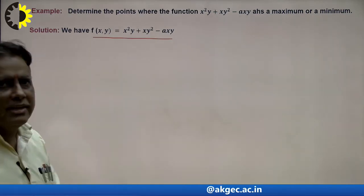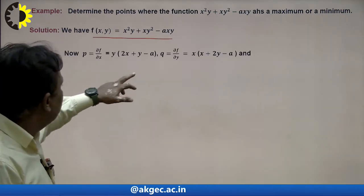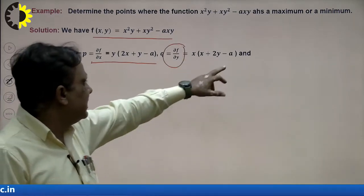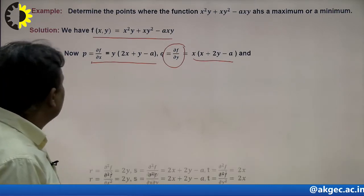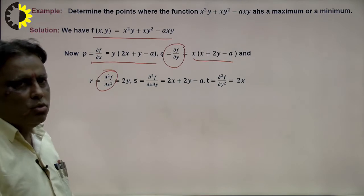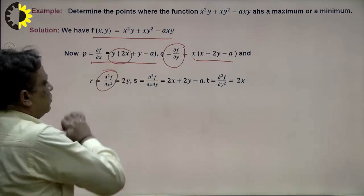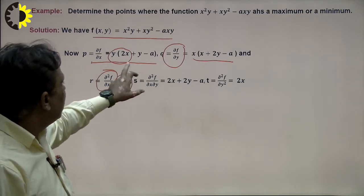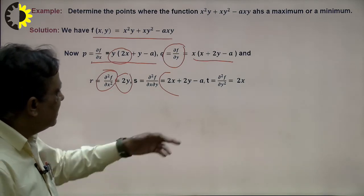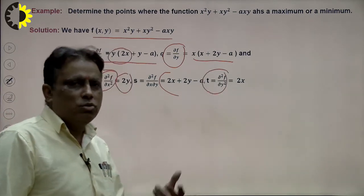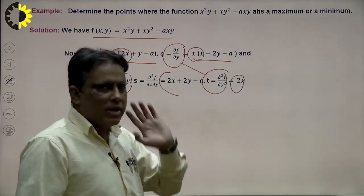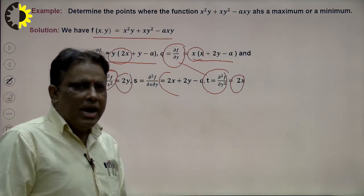For another function, we calculate ∂f/∂x (first derivative with respect to x) and ∂f/∂y (partial derivative with respect to y). For maxima and minima, we put ∂f/∂x = 0 and ∂f/∂y = 0. We then calculate the second derivative to get r. The result: differentiating 2yx with respect to x gives 2y for r. s = ∂²f/∂x∂y gives 2x + 2y. t means differentiating twice with respect to y: differentiation of x² gives 2x, leading to t. We calculate p, q, r, s, t.